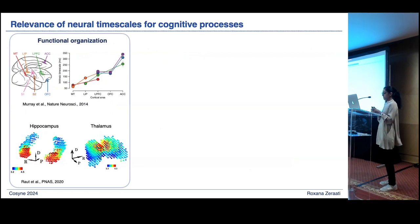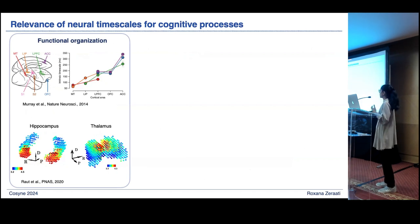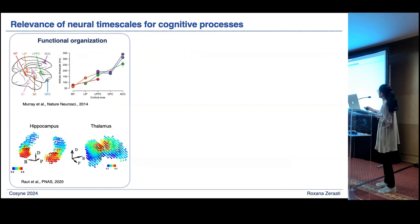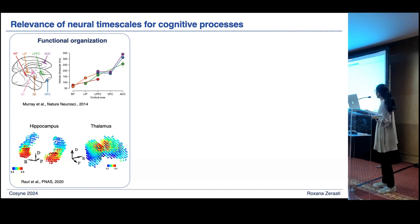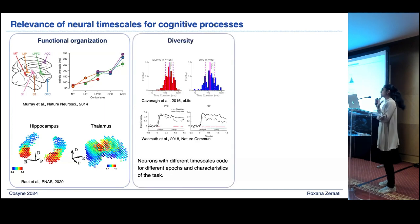These very simple measurements have actually been related to different types of cognitive processes and functions. There is now a large body of literature across different neural analyses suggesting that neural timescales in the cortex are hierarchically organized — neurons in sensory areas have faster timescales compared to neurons in association areas involved in cognitively demanding tasks. There is also a beautiful paper that looked at timescales from fMRI activity across the whole brain.